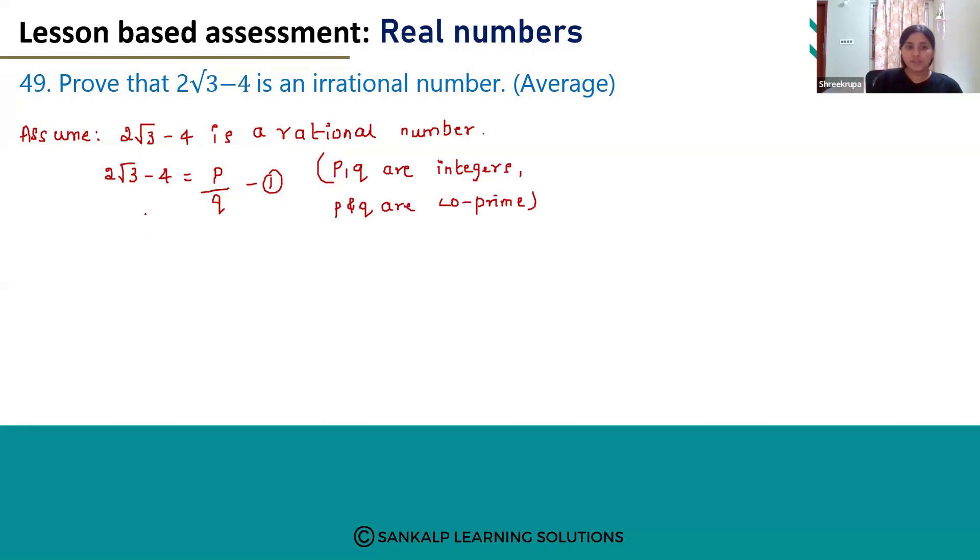We have to add 4 to this equation. We should add 4 to equation 1: 2√3 - 4 + 4 = p/q + 4. This minus 4 and plus 4 will get cancelled. So, 2√3 will be equal to p/q + 4. Let's take the LCM: (p + 4q)/q is equal to 2√3.